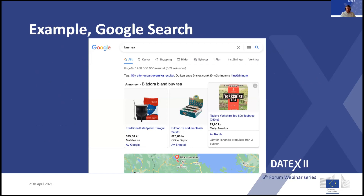Here is one example you've probably seen in the real world. If you search for a product on Google — as I've done here searching for a bike — you get products at the top with price, picture, description, and where you can buy them. They come from different sources. What those websites have done is tag their data in a machine-readable way, declaring what a price is and what an image is. When Google indexes those pages, it understands and can produce a common view of that data to present when you search. This is a very typical use of linked open data and structured data.